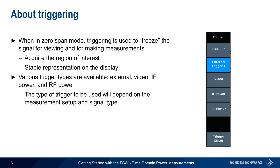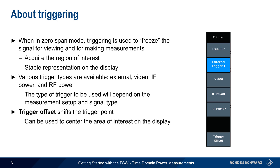The trigger type used will depend on the measurement setup and the signal type, and in many cases acceptable results can be obtained using any one of these trigger types. Another trigger-related parameter is trigger offset, which can be used to shift the position of the trigger point. This can be used to center the area of interest on the display — for example, moving a pulse to the center of the screen rather than having it appear on the edge.